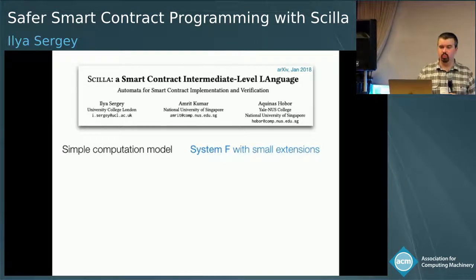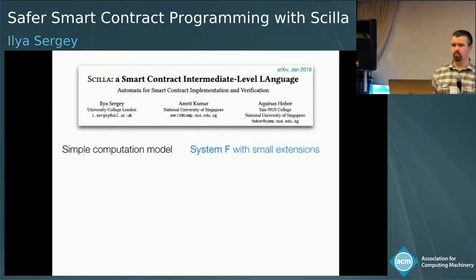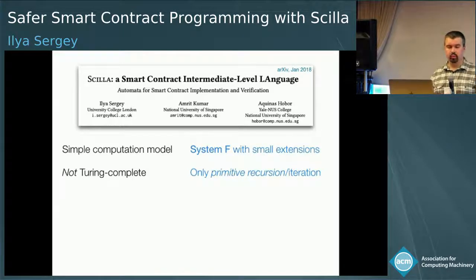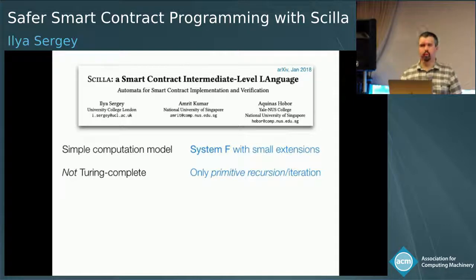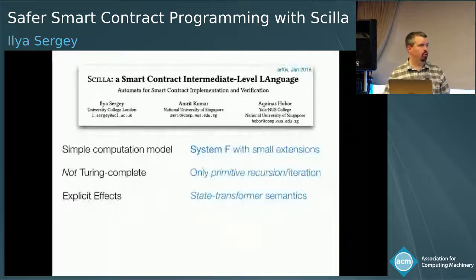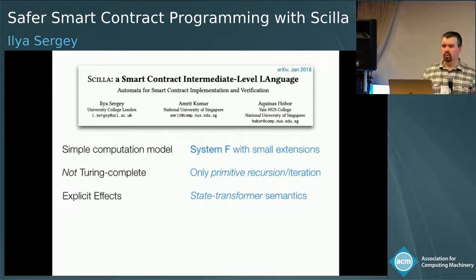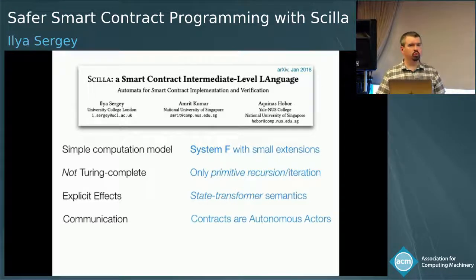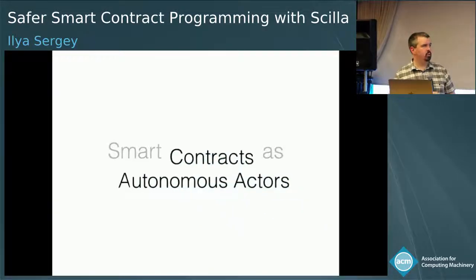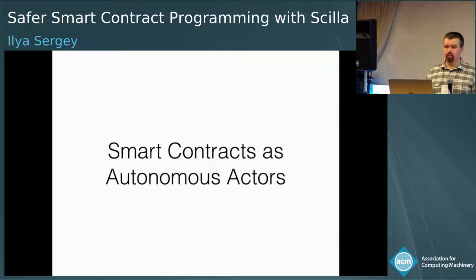The proposal had a really simple computation model for smart contracts. We adopted System F, the polymorphic lambda calculus, with simple exceptions as the base computational model. The contracts are not Turing-complete — they don't have general recursion, only primitive structural recursion equivalent to iteration. The language at the syntactic level distinguishes between effectful and uneffectful code, with a straightforward state transformer semantics. Most importantly, we decided to consider contracts as explicitly structured as autonomous actors, so all communication boundaries are enforced at the syntactic level of the program.